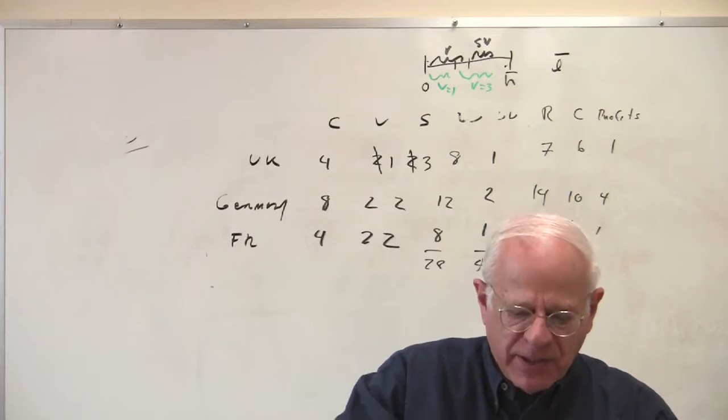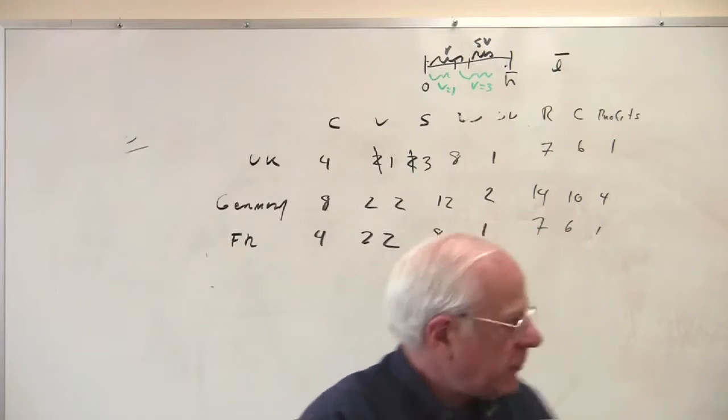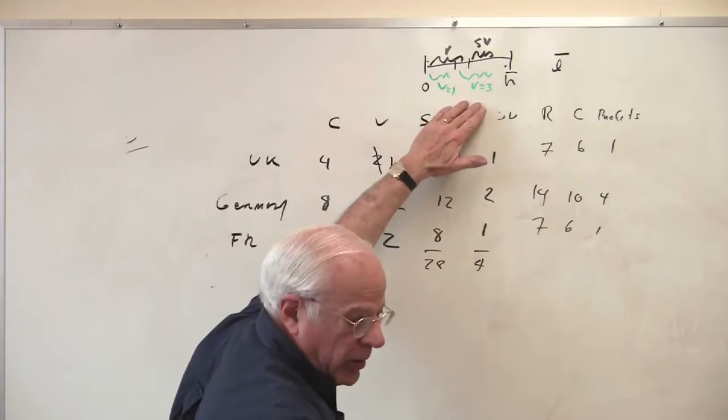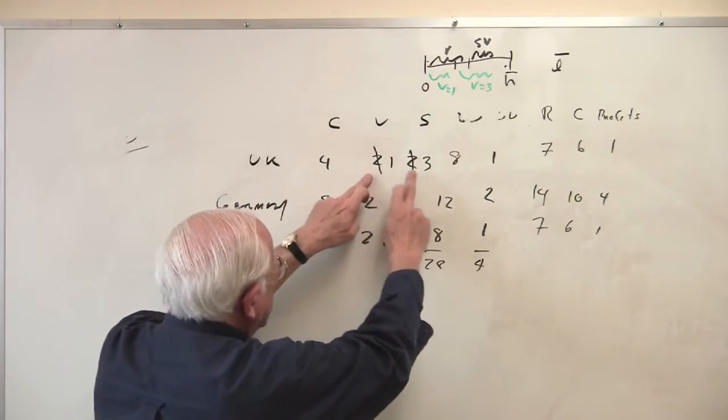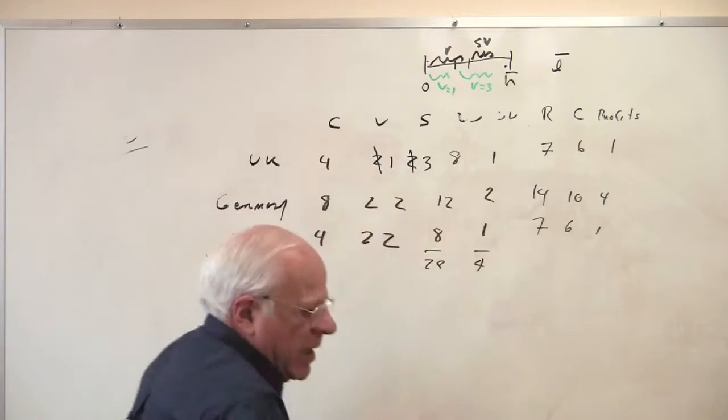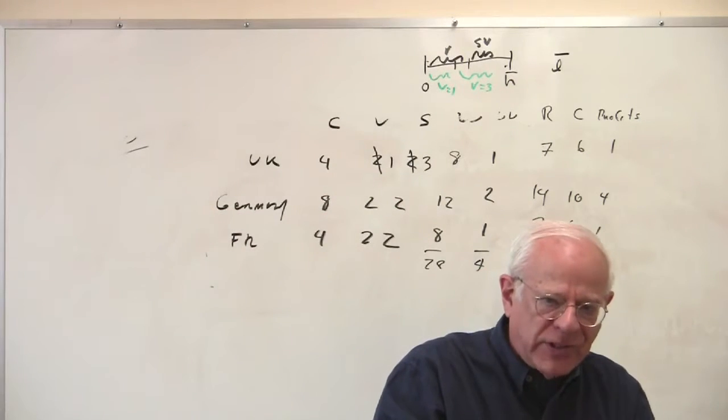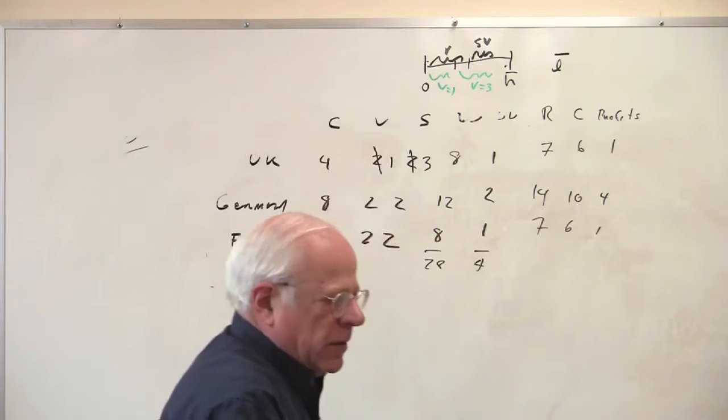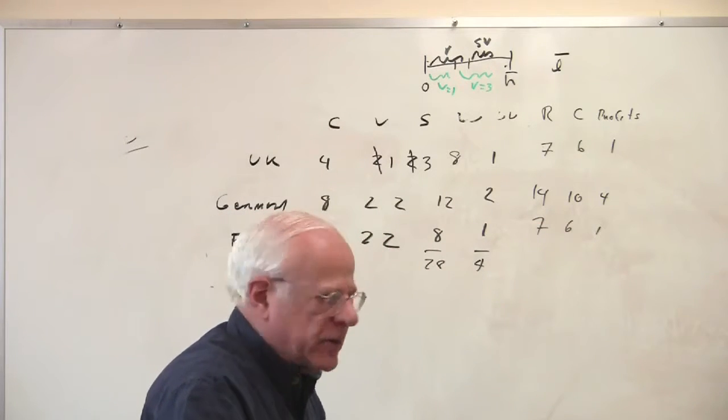So the capitalists are getting now, okay, they're getting that component of 4, like they did before, 2 plus 2. They're now getting 1 plus 3. But they can pay the workers less for getting the same. The rate of exploitation has increased.